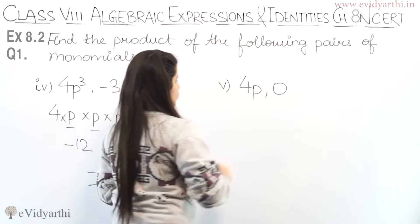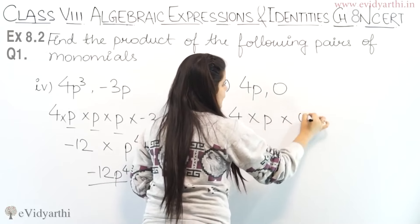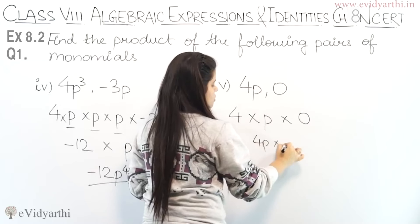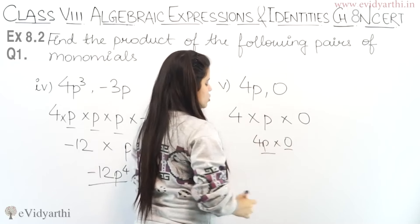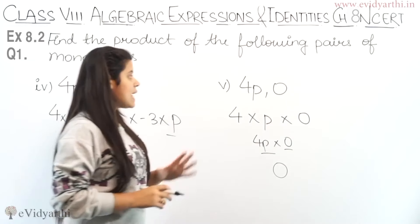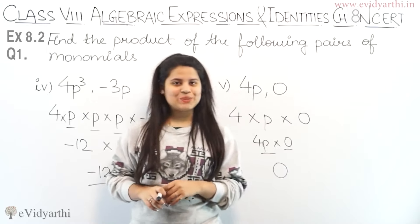Now, moving to the 5th part. In the 5th part we have 4 multiply P multiply 0. When you multiply anything with 0, it will be 0. So the answer is 0. So this was question number 1. Now, let's come to the next question.